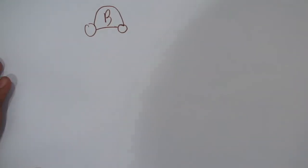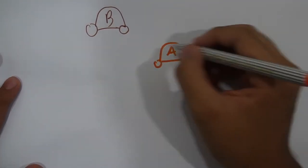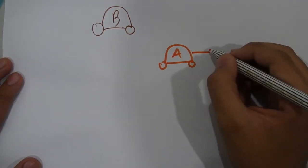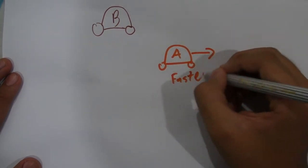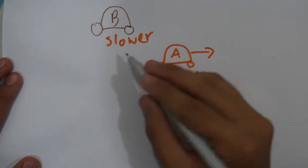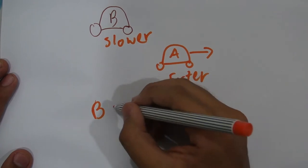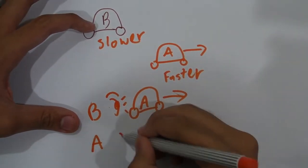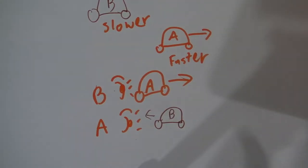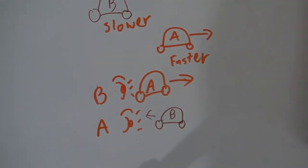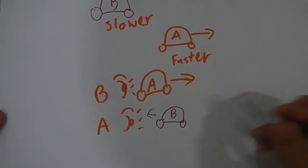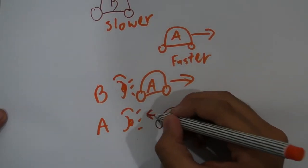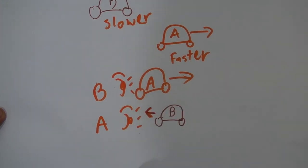Just as an example, for car B, it will see car A going forward because it experiences more time than car A as time flows more slowly for car B than for car A. And for car A, it is the opposite as the time flows more faster for car A than for car B. So car A experiences a lot less time than car B. So it sees car B as going backwards.